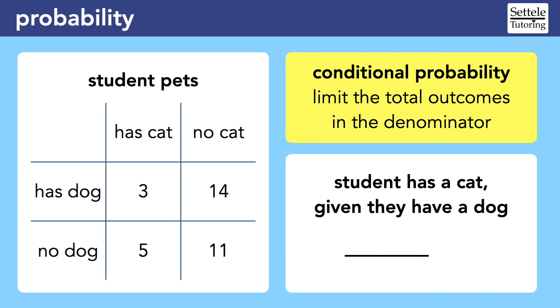But sometimes the SAT asks for a conditional probability, where the number of possible outcomes is limited by the question. In this case, we're looking for the probability that a student has a cat given that they have a dog. In other words, the denominator should only focus on the students who have a dog, which would be 3 plus 14.